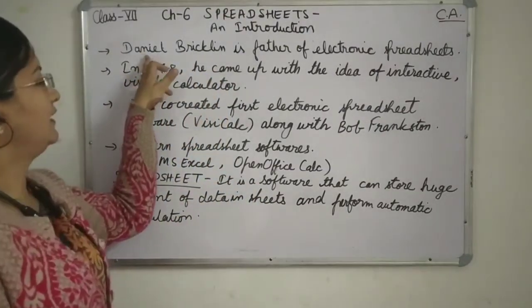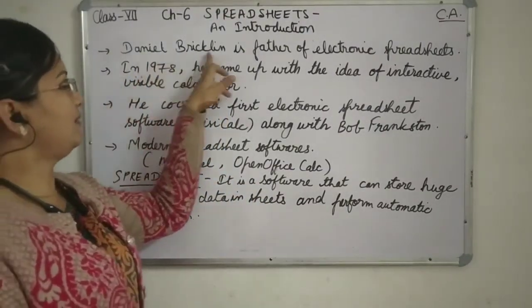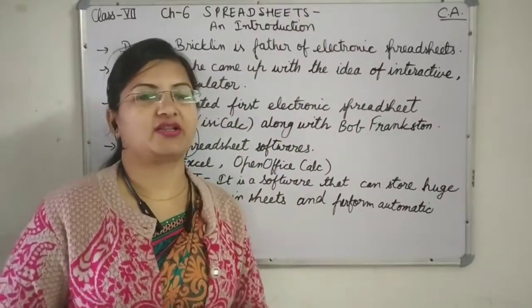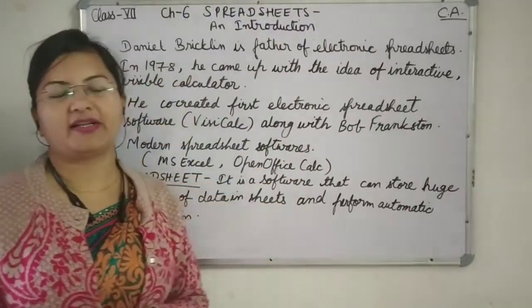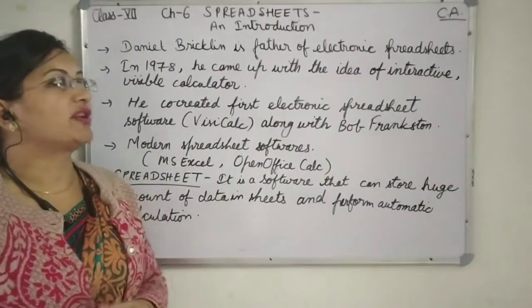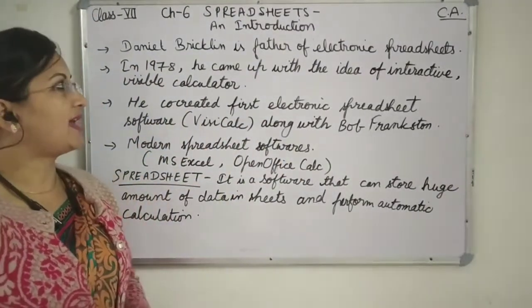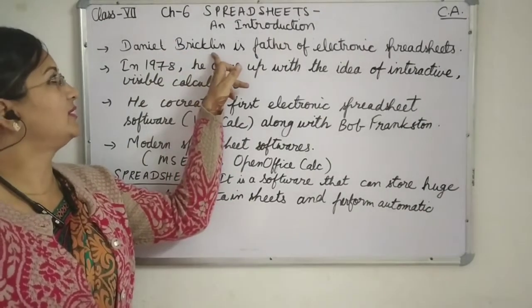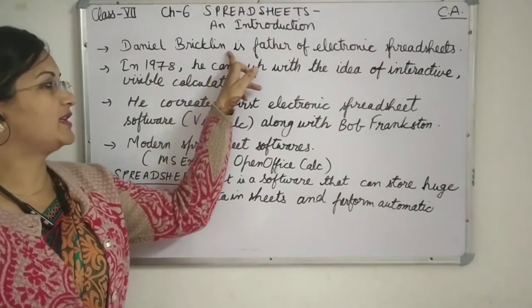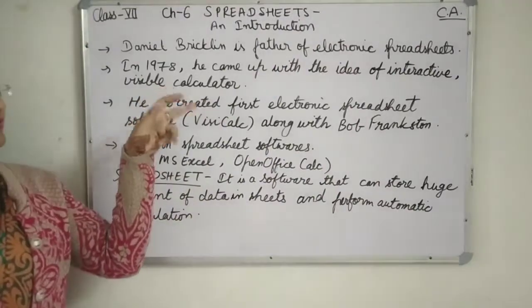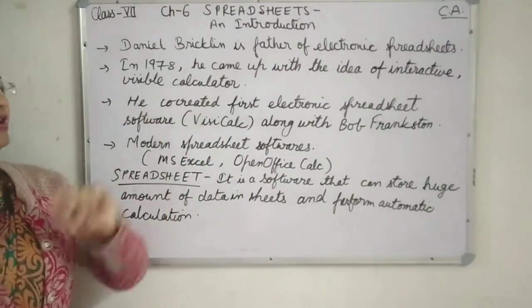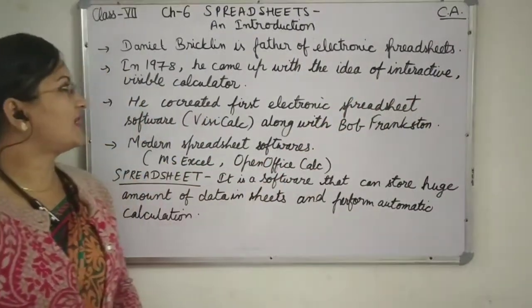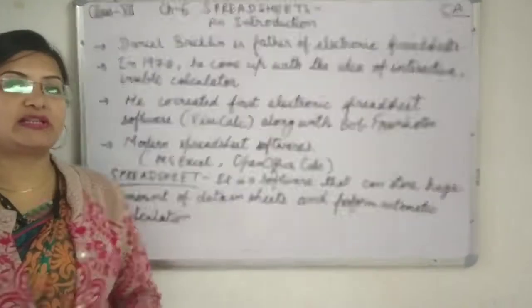Daniel Bricklin is the father of electronic spreadsheets. He found electronic spreadsheets and in short he is also called Dan Bricklin. In 1978, he found the idea of an interactive visible calculator.